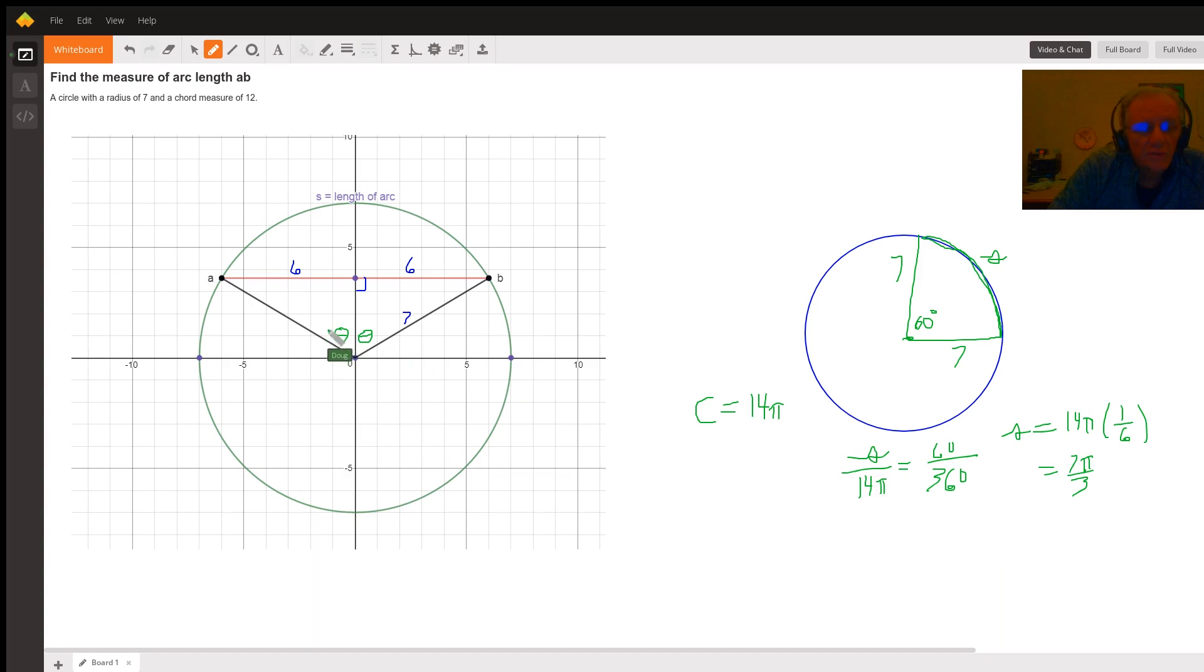So if we could find what theta is, and then double it, we'd have the length or the size of this central angle. And then we'd be having a problem just like this one over here. Okay, so let's see.